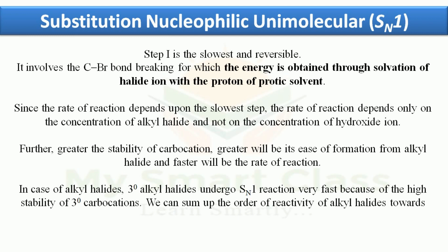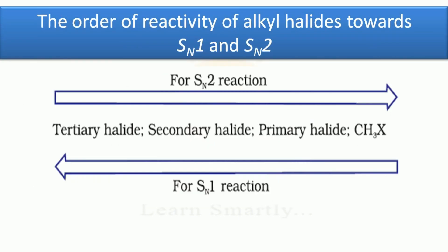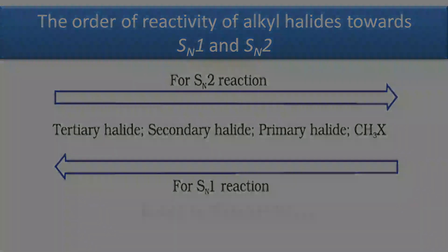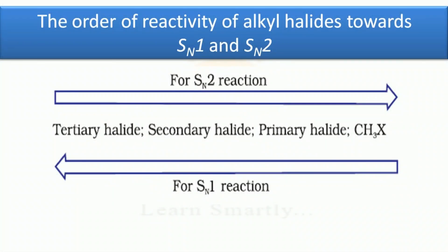The rate of SN1 reaction depends only on the concentration of the substrate molecule. In Step 2, the carbocation is attacked by hydroxide ion to form the product — this is a fast step. The more stable the carbocation, the faster the product forms. Tertiary alkyl halides undergo SN1 very readily due to highly stable tertiary carbocations. To summarize: in SN2, the reactivity order is CH3X > primary > secondary > tertiary, but this order is inverted in SN1, where tertiary is most reactive.